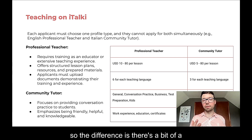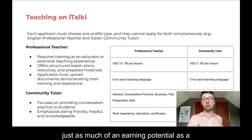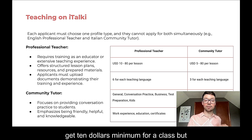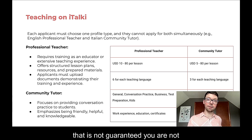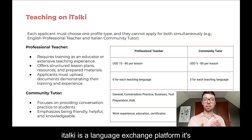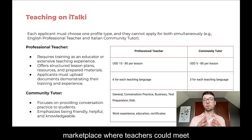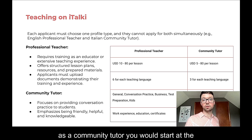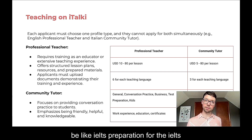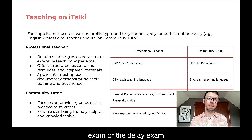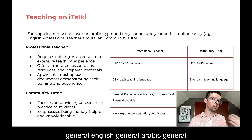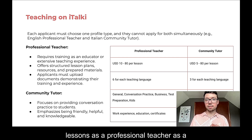A professional teacher has just as much earning potential as a community tutor. $80 USD is the maximum. If you're a professional teacher, you get a $10 minimum for a class, but that is not guaranteed — you are not guaranteed any income on iTalki. You need to find the students and market yourself. iTalki is a marketplace where teachers can meet students. As a community tutor, you would start at the very lowest at $5 USD per hour. There are six different types of classes for professional teachers — such as IELTS preparation, DELE, DELF, business English, business Chinese, or general English.